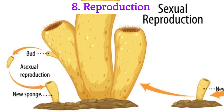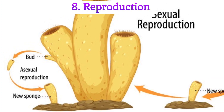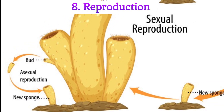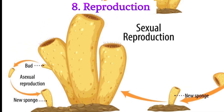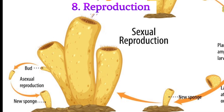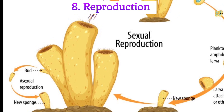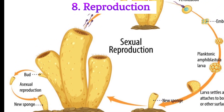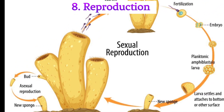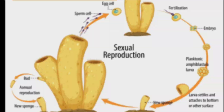Point 8: Reproduction. Sponges reproduce both sexually and asexually. They can produce specialized reproductive structures called gemmules and even exhibit external fertilization in some cases.